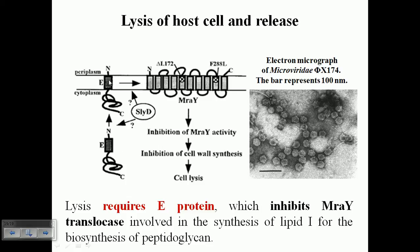Once E proteins are attached to the periplasm or cell membrane of the host cell, they don't produce any lysis enzymes. Instead, protein E is a transmembrane type of protein that embeds onto the host cell surface. It then associates with MraY and blocks its activity, thereby inhibiting cell wall synthesis.